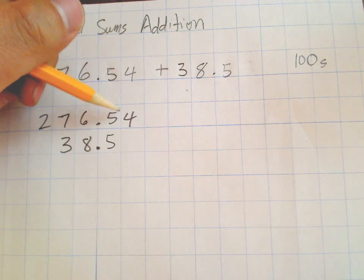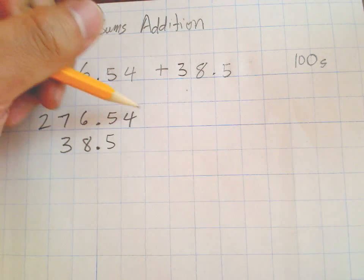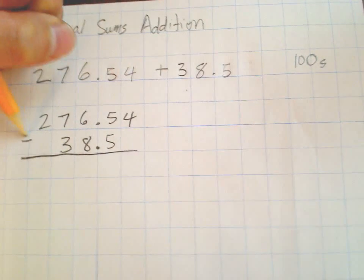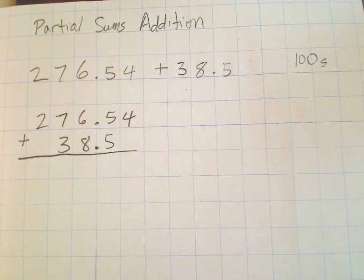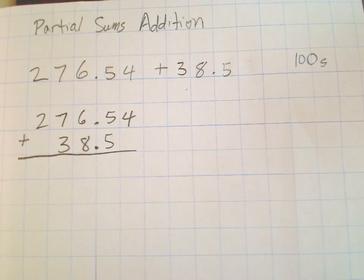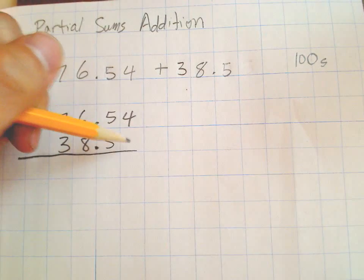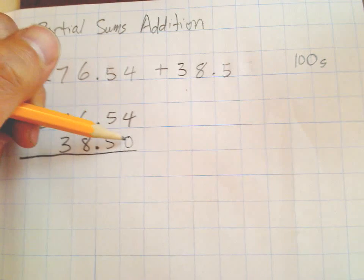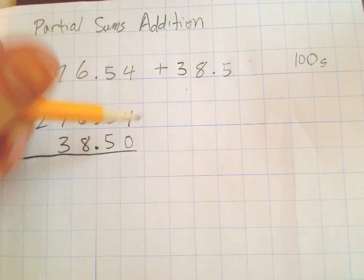That decimal point means it's the end of the whole numbers and the beginning of the partial numbers, like tenths and hundredths, etc. So here's our problem: 276 and 54 hundredths plus 38 and 5 tenths. Now because there are no hundredths here, we can easily just put a zero here as a placeholder.